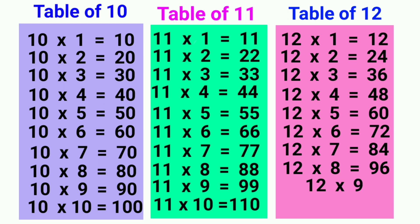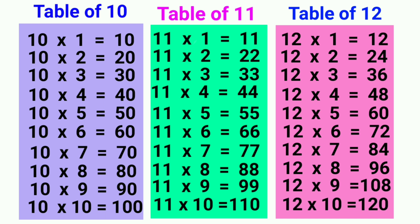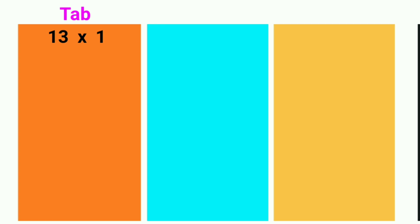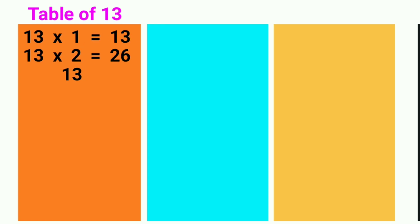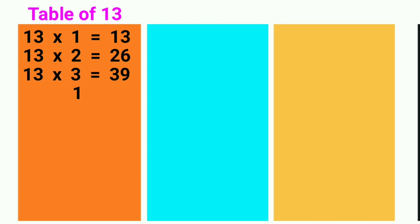12 nines are 108, 12 tens are 120. 13 ones are 13, 13 twos are 26, 13 threes are 39, 13 fours are 52,